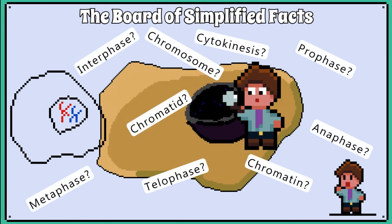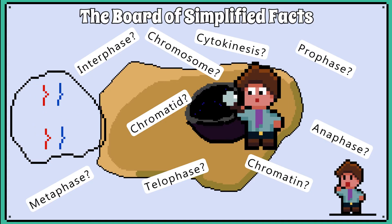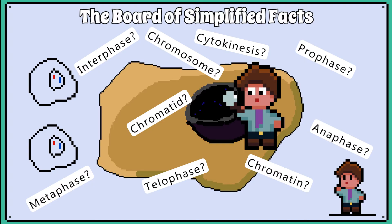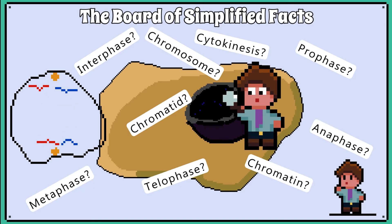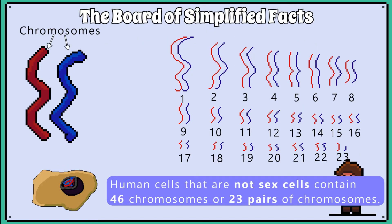Now, we will focus on how the DNA arranges itself in the nucleus of a cell as it undergoes mitosis. Hopefully this will help you to visualise the process, but some of the terms used will not be in your exam, although they are useful if you plan on doing A-level biology. Human cells that are not sex cells contain 46 chromosomes, sometimes referred to as having 23 pairs of chromosomes.